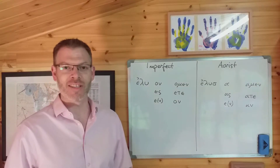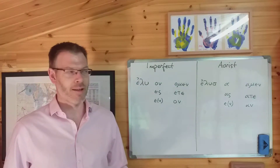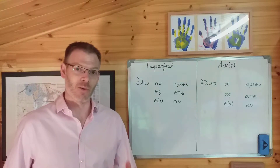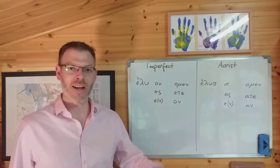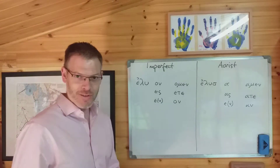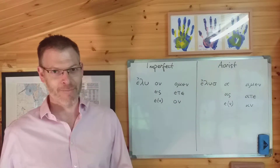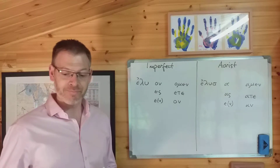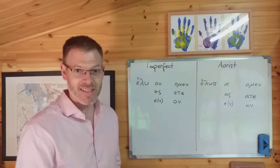Now all that remains for us to do is to learn the endings. You already know the endings for the present tense. All we have to do now is learn the endings for the future, imperfect, and aorist tenses. And that's what we've got on the board here. The good news in this video is that there is no future tense written here, because — Lord be praised — the future tense endings for the simple verbs we're learning at the moment are exactly the same as the endings for the present tense.